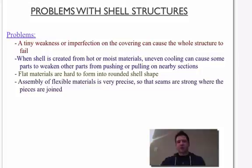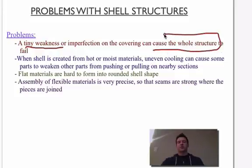We have some problems with these shell structures. Any tiny weakness in these structures can cause the whole structure to fail. One minor flaw in this whole structure could become weak and fail. Second, when the shell is created from a hot or moist material, if there's uneven cooling, it can cause some weaknesses in various parts. When there's pushing or pulling on them, we'll see those weaknesses come out. Heating and cooling, if we have uneven cooling, is going to cause some problems.